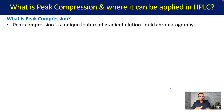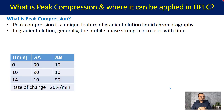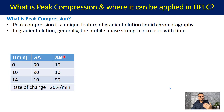The peak compression concept is applicable when you are using a gradient elution. In gradient elution, the mobile phase strength generally increases with time. For example, percent A is a weaker diluent like an aqueous solvent and percent B is a stronger diluent like an organic solvent such as methanol or acetonitrile.